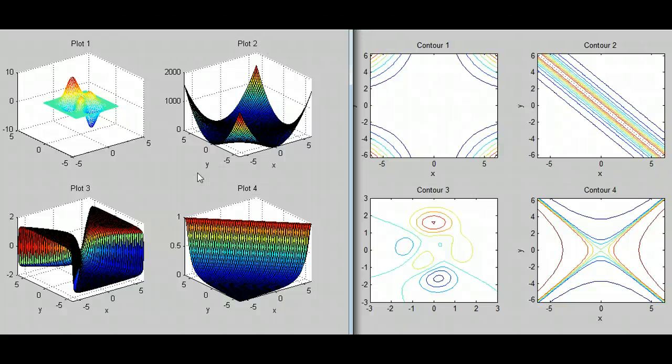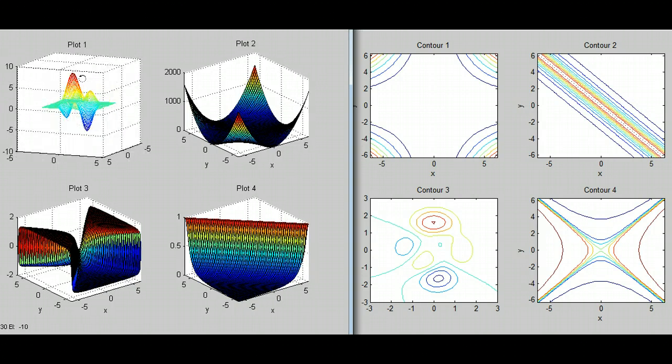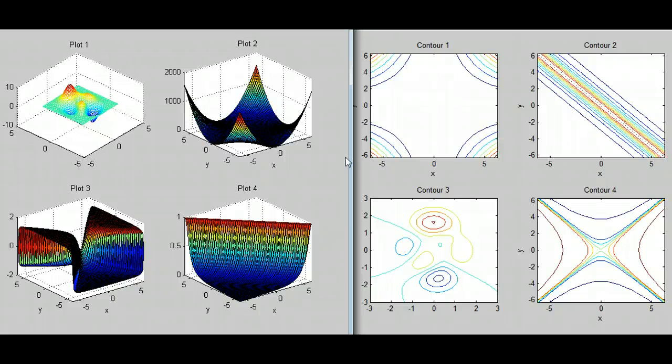Let's look at a simple example of matching a graph, a three-dimensional graph, of a function of two variables with a contour plot of the same function. So I've got four plots here and I've got four contours here.